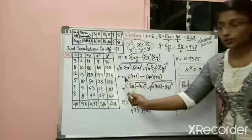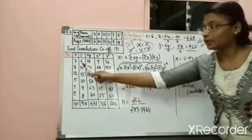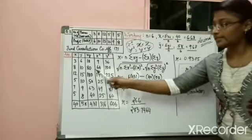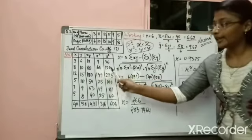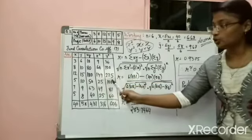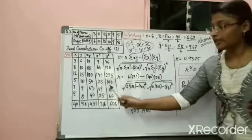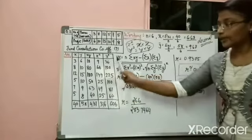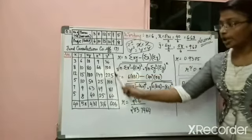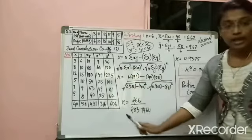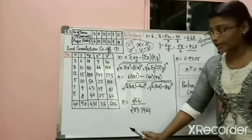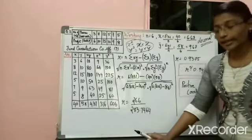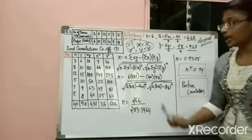Similarly with y². What is your y for the first one? It is 6, so 6 × 6 = 36, 10 × 10 = 100, 15 × 15 = 225, 10 × 10 = 100, 9 × 9 = 81. You have to complete the x² and y² columns and then total up each column. Now let us come to the formula.